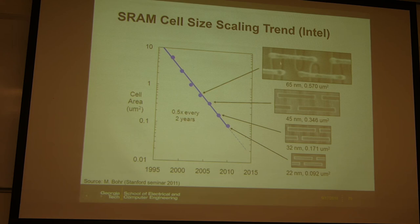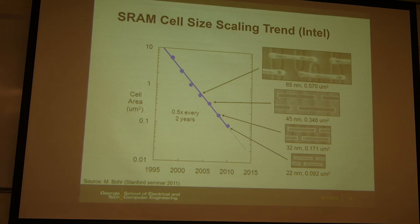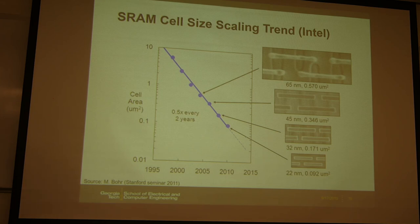Here is the layout under the microscope. You can see the 65 nm, 45, 32, and 22 nm nodes all have a similar layout with straight lines in the gate area. From 65 to 45 nm, the shape becomes more rectangular and smoother due to double patterning, which improves lithography and resolution. From 32 to 22 nm, the cell size drops below 0.1 micrometer squared.